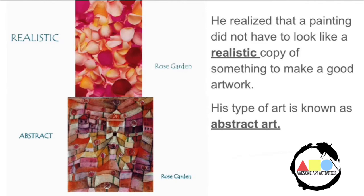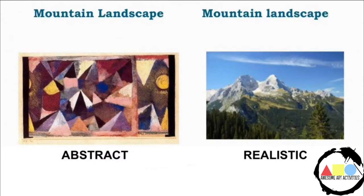Here we can see a realistic photo of rose petals, and then here is an abstract version as well. Here's another example of comparing abstract art to realistic art. The one on the left is abstract because it's created by grouping shapes together.